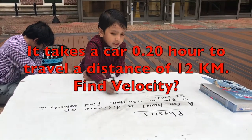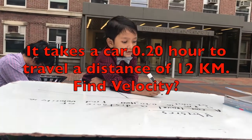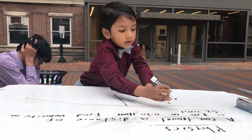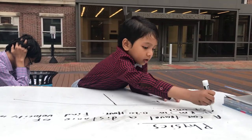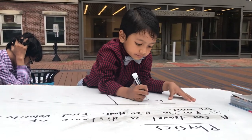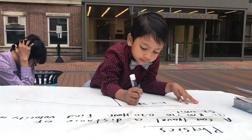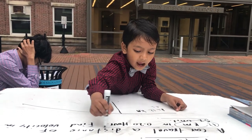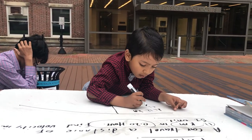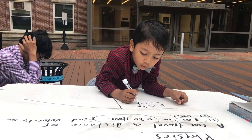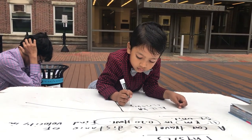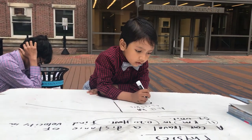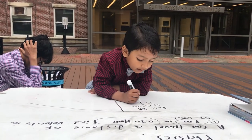So, key table: distance is 12 kilometers, time is 0.20 hours. Find the velocity and convert it to SI units.